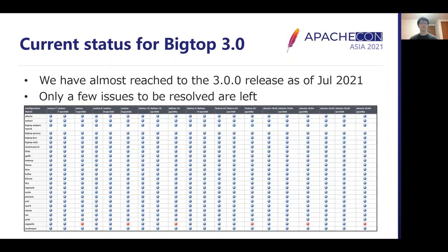This is a screenshot of our CI result. This matrix represents that we already succeeded in building all components for all Linux distributions and CPU architectures we support, except for a few cases shown by red circles. We also still have a few smoke test failures and a few issues left, but I expect those problems will be resolved in a few months.